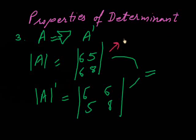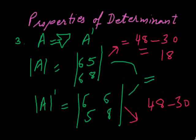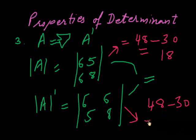For the first determinant's expansion: 6 times 8 equals 48, minus 5 times 6 equals 30, giving us 18. For the transpose: 6 times 8 equals 48, minus 6 times 5 equals 30, which also gives us 18.